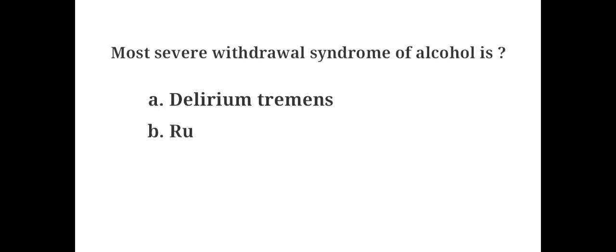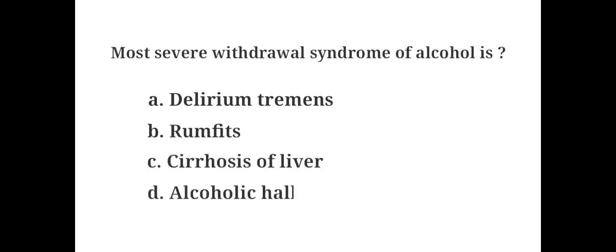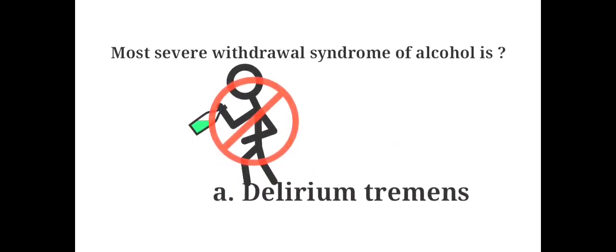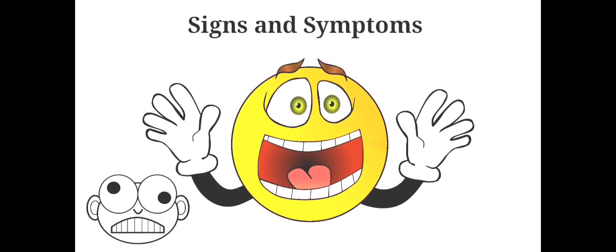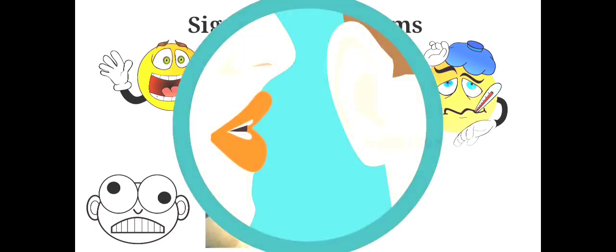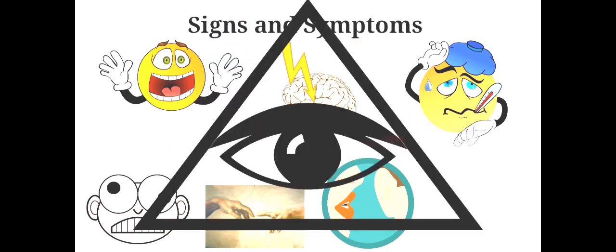The most severe withdrawal syndrome of alcohol is: A. Delirium tremens, B. Rum fits, C. Cirrhosis of liver, D. Alcoholic hallucinosis. The answer is A. Delirium tremens. Signs and symptoms of delirium tremens include extreme confusion, extreme agitation, fever, seizures, tactile hallucinations, auditory hallucinations and visual hallucinations.